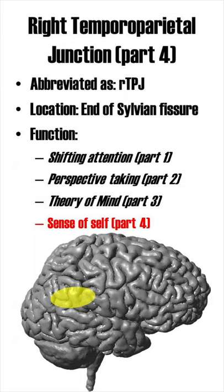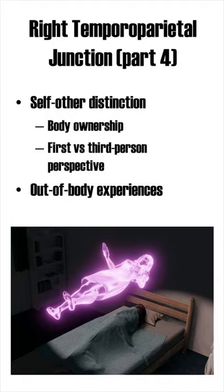One of its main functions is processing a sense of self. A ball is flying through the air — did you throw it, or did your friend throw it? Well, you probably know, because the RTPJ processes the distinction between actions that you did yourself and actions that others do. In other words, it processes the difference between a first- and third-person perspective.